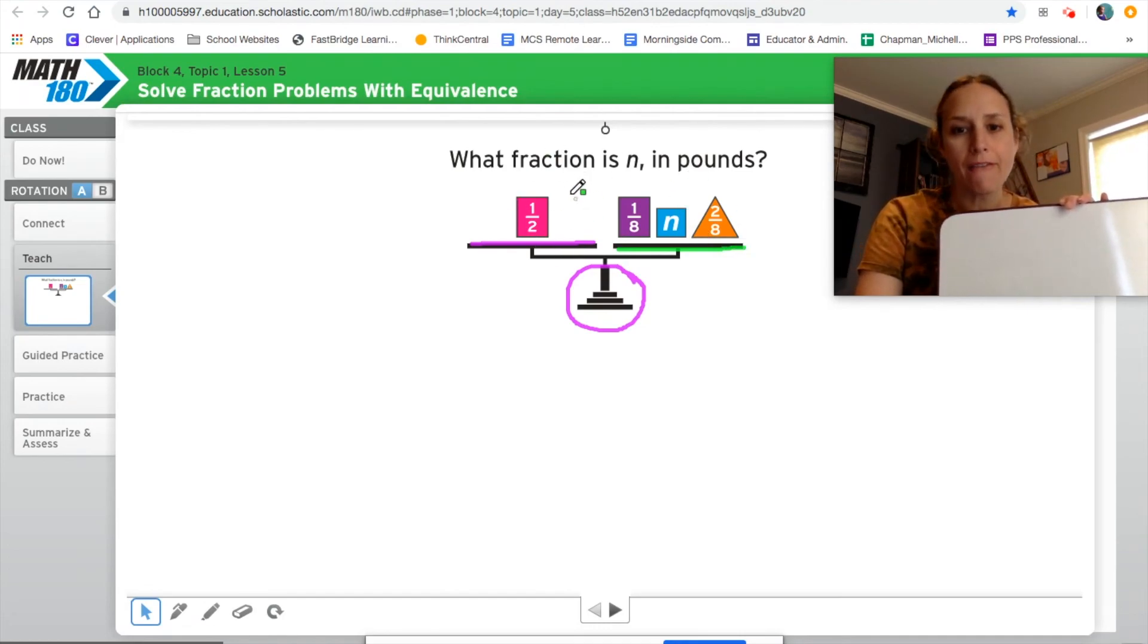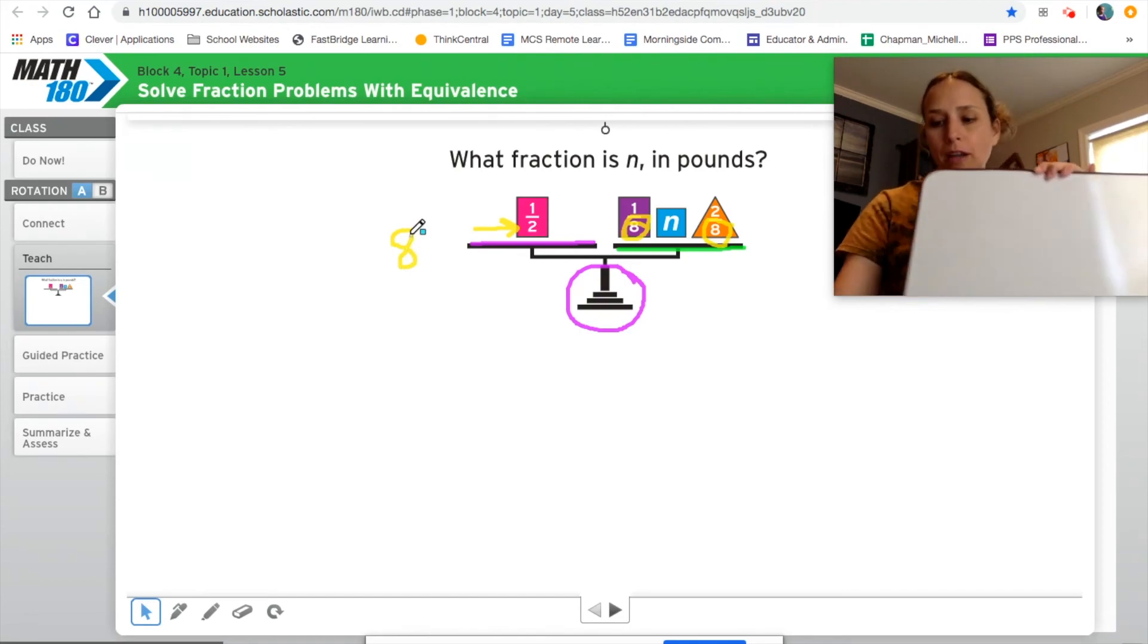So one half has to be equivalent to whatever all of these fractions are together. So if we think about this together, we think about what we know about equivalent fractions, we're going to look right away and say, okay, what's the denominator that I need to be looking at? I need to be looking at a denominator of eight. These have a denominator eight, which means I need an equivalent fraction that has a denominator of eight.